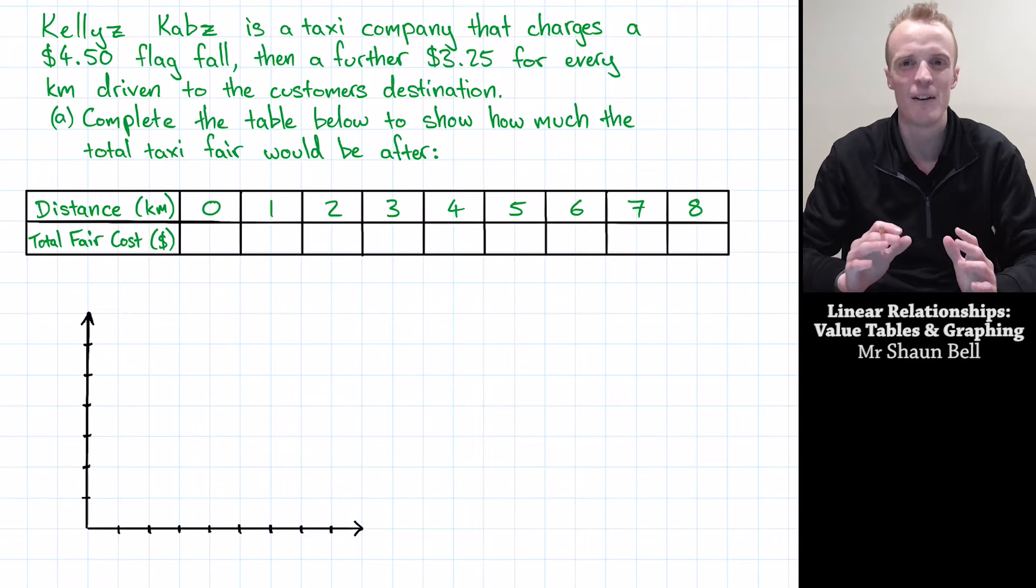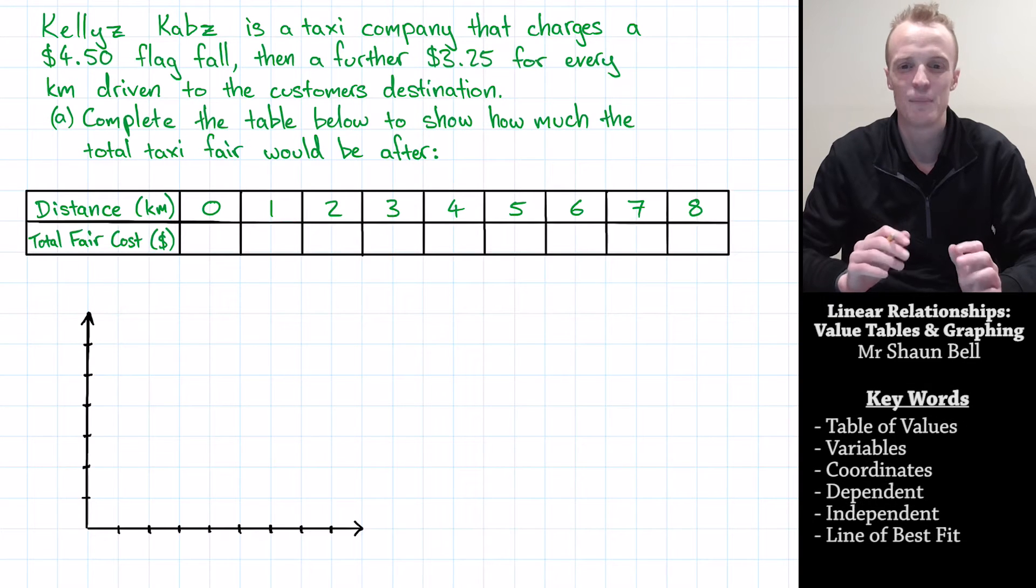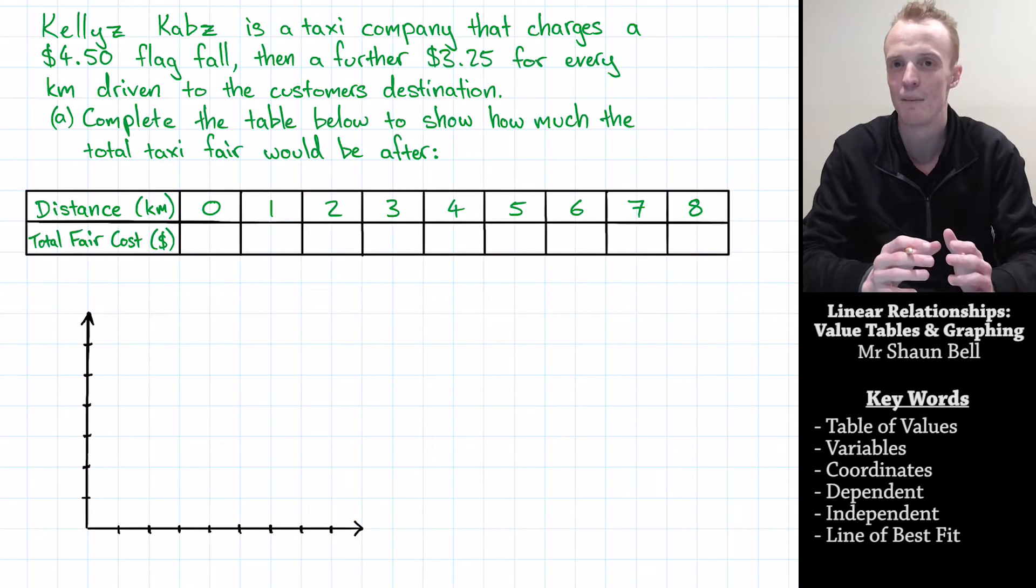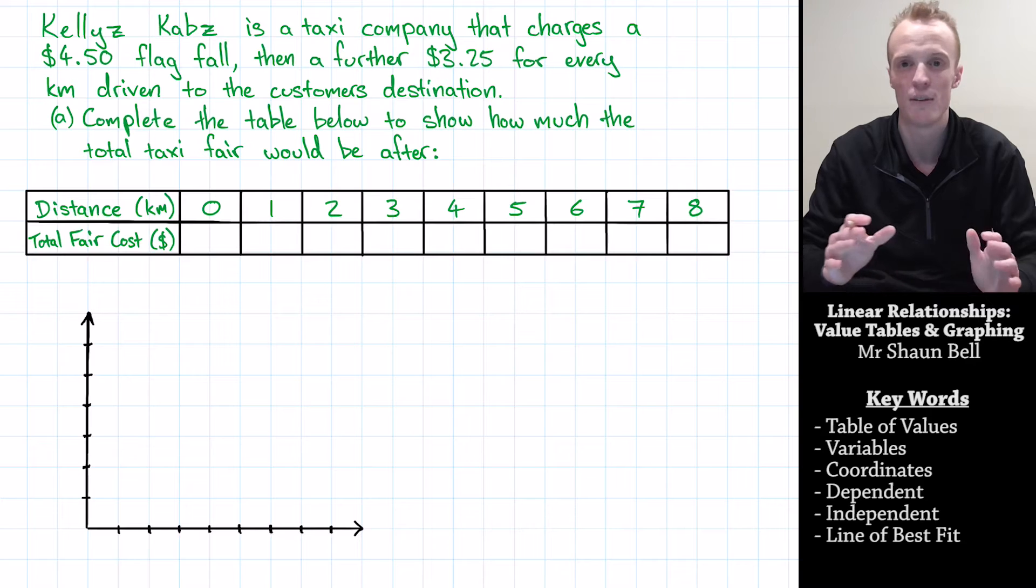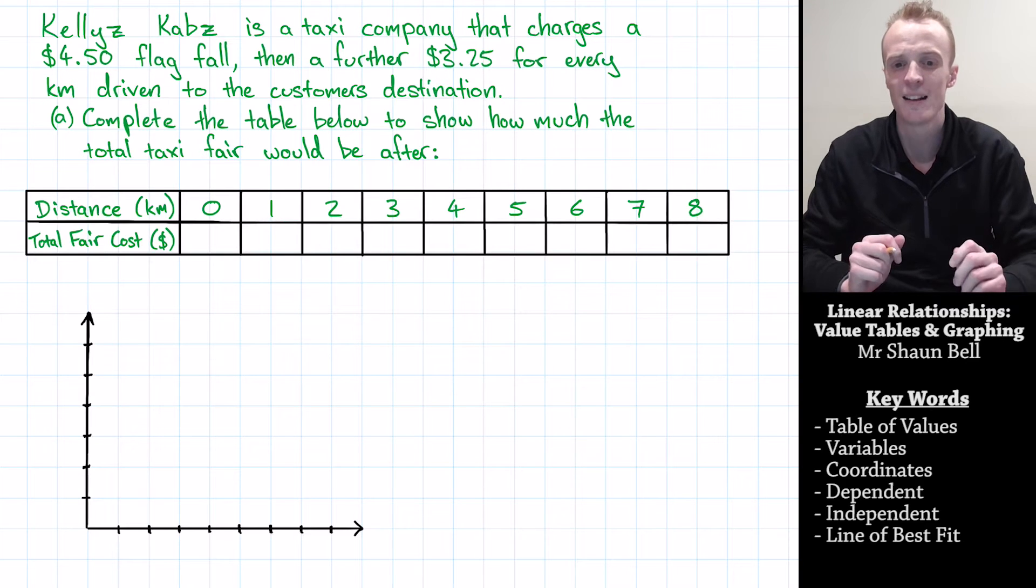Let's begin by having a look at this problem. Kelly's Cabs is a taxi company that charges a $4.50 flag fall. Now a flag fall means that when they get into the cab, they immediately get charged $4.50 before they travel anywhere.